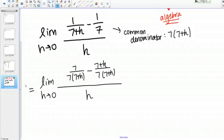Now, this is what we have. Now that we have a common denominator on top, we can actually combine those fractions into one fraction. On the top, I'm going to get 7 minus 7 minus H, so be careful there, you need to distribute the subtraction sign to both terms, so 7 minus 7 minus H, and that's all over the common denominator, 7 times 7 plus H. This is still all over H.